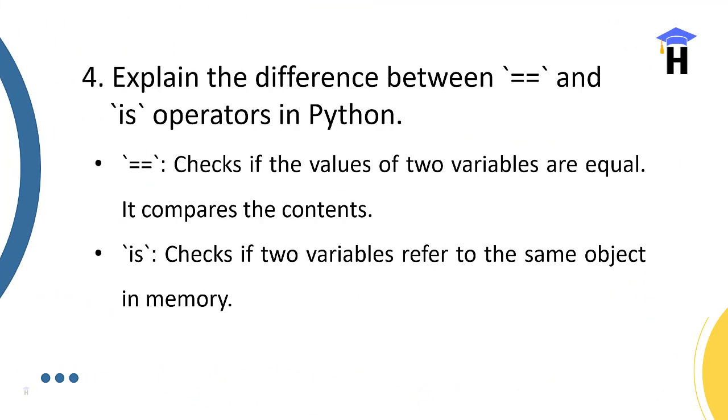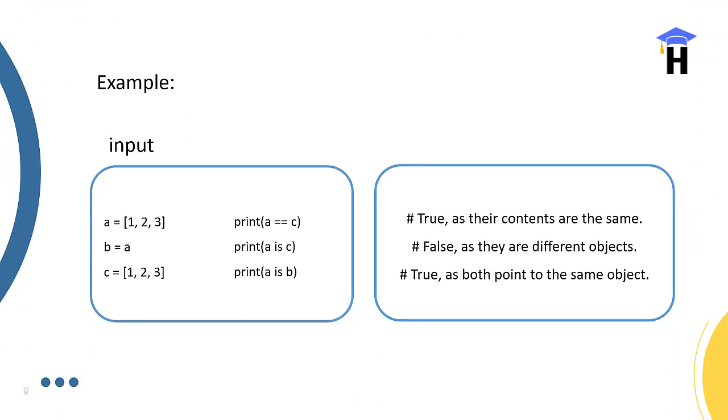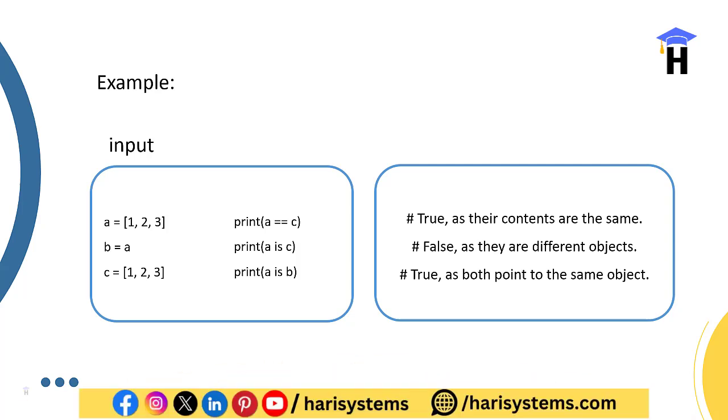The next question is: Explain the difference between double equals and is operator in Python. Double equals checks if the values of two variables are equal—it's a comparison operator. Is checks if two variables refer to the same object in memory. Strongly understand the difference in identifying between two data items or memory allocations.